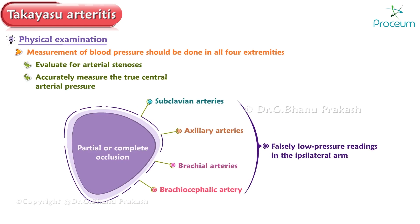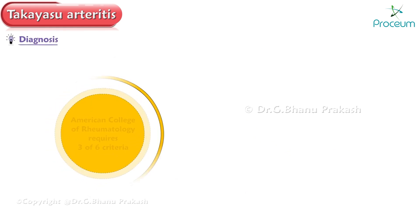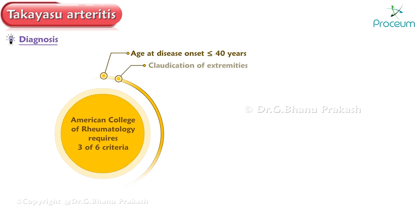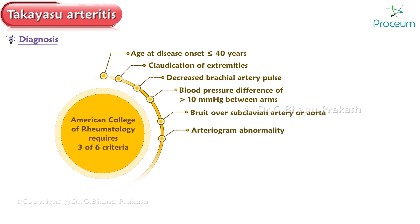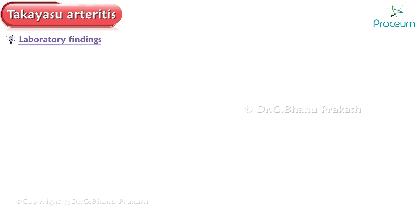For diagnosis, the American College of Rheumatology requires three of the following six criteria: age at disease onset less than or equal to 40 years, claudication of extremities, decreased brachial artery pulse, blood pressure difference greater than 10 mmHg between arms, bruit over subclavian artery or aorta, or arteriogram abnormality.